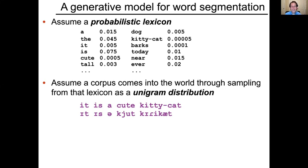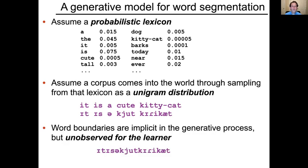In this model, it's incredibly unlikely to get a word sequence of the form 'it is a cute kitty cat,' because you have to have reached into your lexicon over and over again and gotten 'it is a cute kitty cat' in that order. Then we assume that the learner gets an input whose relationship to that word sequence is simply the loss of the boundaries between words.